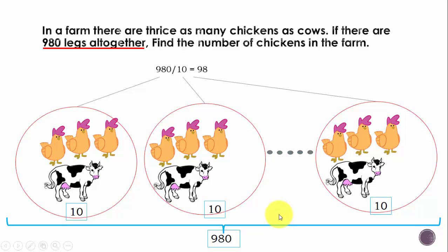So that can be given by 980 divided by 10, which gives you 98. 98 is the number of groups that you have. And the question here is find the number of chickens in the farm.